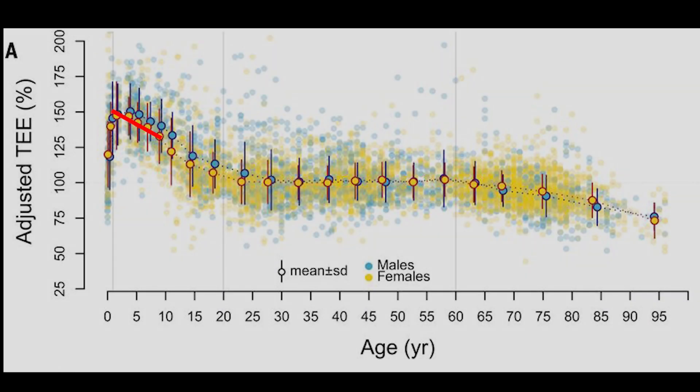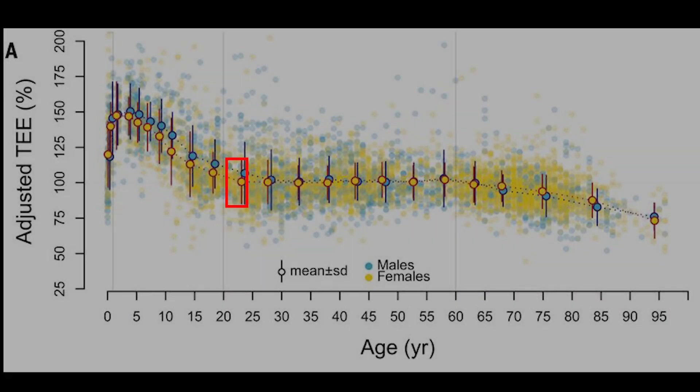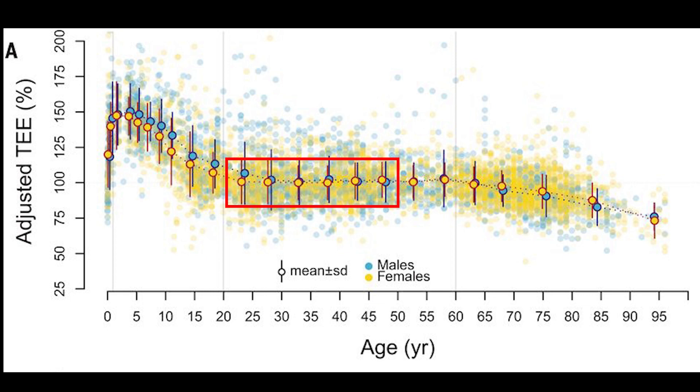And so the next phase is a steady decline until the 20s. Or as the authors call it, the phase of the juveniles. But then this decline stops by age 20 and stays pretty continuous until 60 years of age.